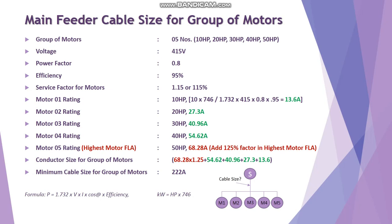I'll take an example where we have a group of five motors with capacities of 10, 20, 30, 40, and 50 horsepower. These five motors are connected downstream and are further connected to the main feeder. We are looking at how to calculate the cable conductor size for the main feeder. The system voltage is 415V, power factor is 0.8, efficiency is 95%, and service factor is 115% — meaning the motors can overload up to 15% above full load.